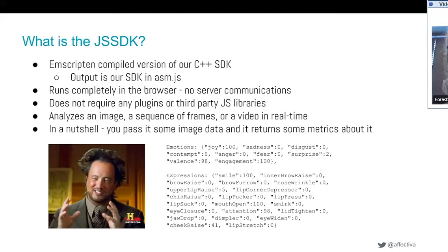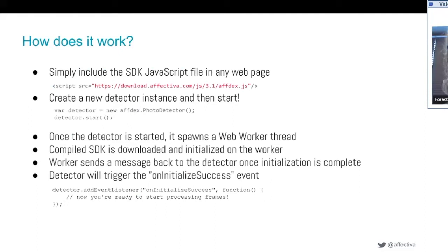The JavaScript SDK is an Emscripten-compiled version of our C++ SDK output to asm.js — plain JavaScript. It runs completely in your web browser with no server communications, no plugins, and no third-party JavaScript libraries. It can analyze an image, a sequence of video frames, or a video in real time. You pass some image data and it returns metrics — for example, passing an image returns emotions like 100% joy, 100% engagement, valence of 98, plus expressions.